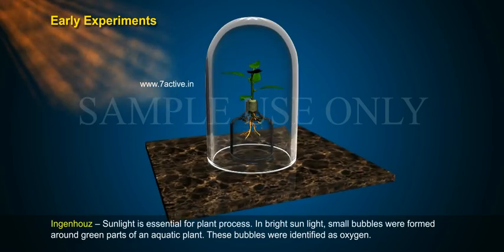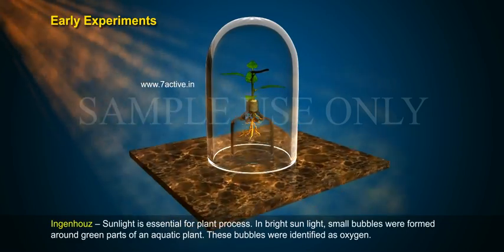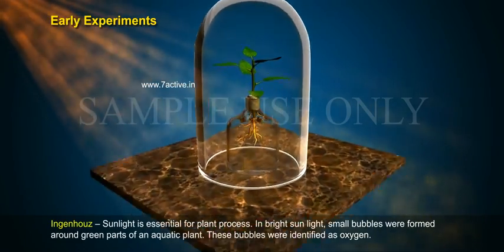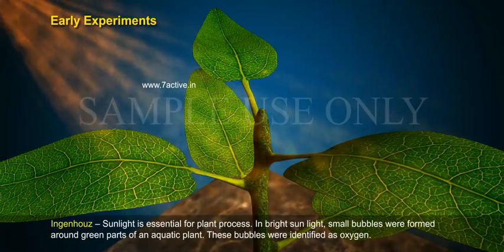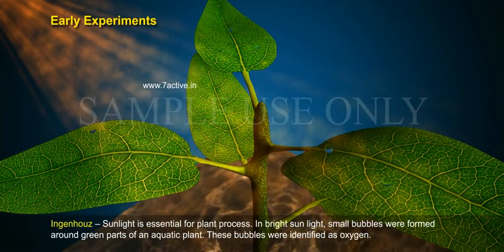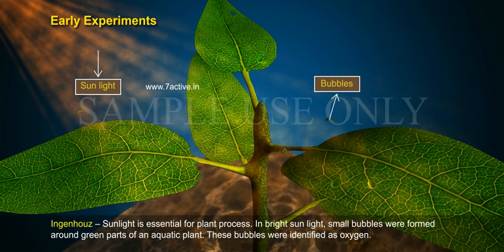Ingenhousz showed that sunlight is essential for the plant process. In bright sunlight, small bubbles were formed around the green parts of an aquatic plant. These bubbles were identified as oxygen.